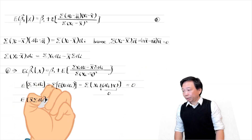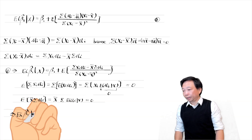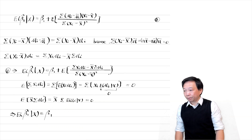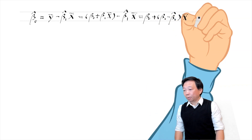The second term also depends on the zero conditional mean assumption. If the assumption holds, the expectation of the OLS estimator beta 1 hat conditional on x equals the population parameter beta 1. In other words, if the zero conditional mean assumption holds, the OLS slope estimator is unbiased.